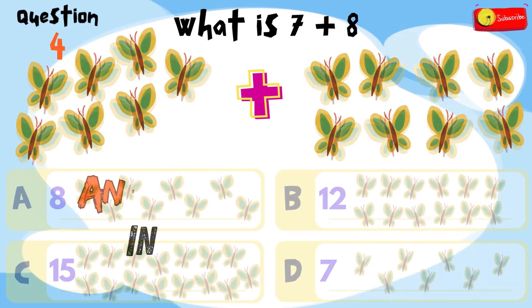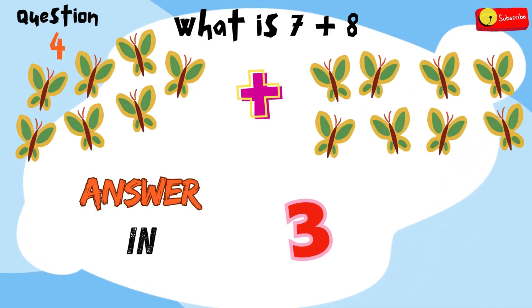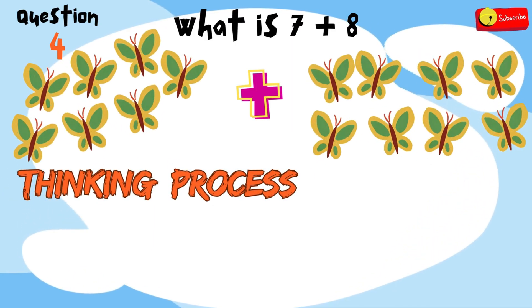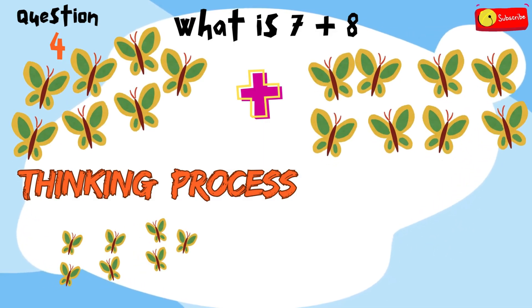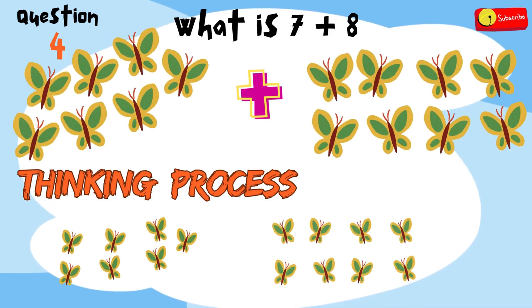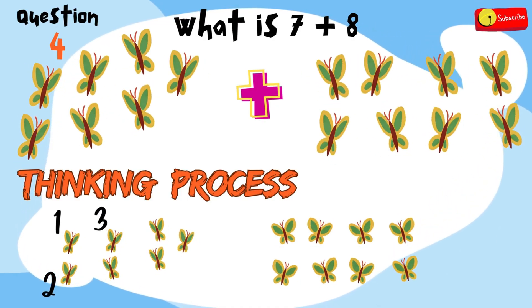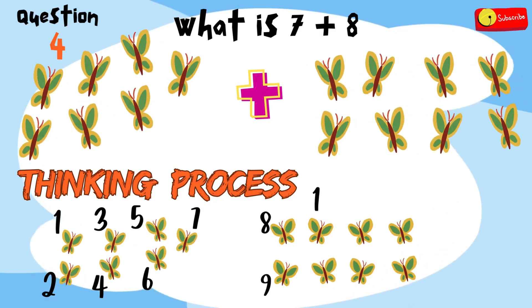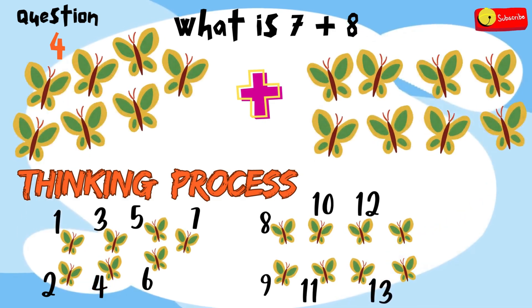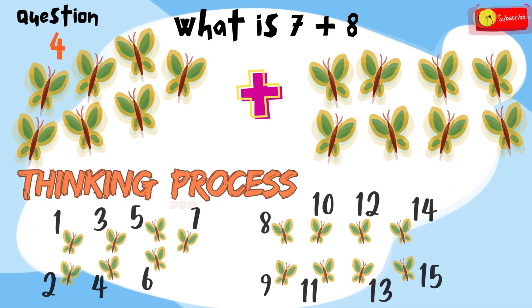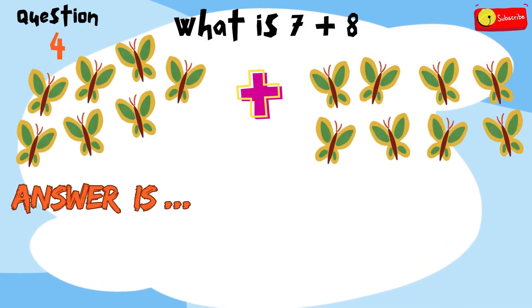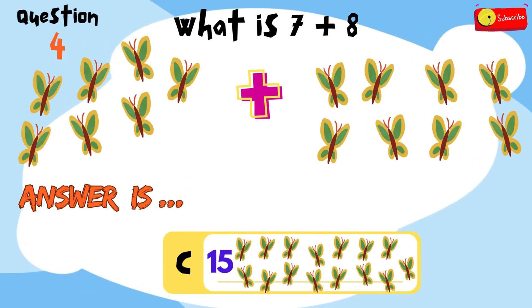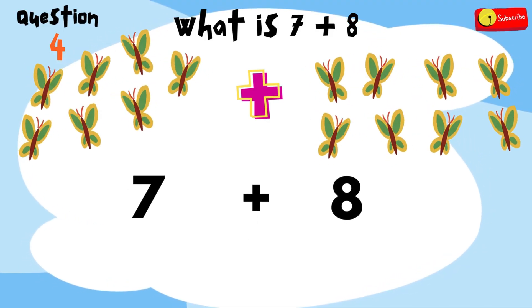All right, time's up! Here's the thinking process: if you have 7 butterflies and we add 8 more, in total we get 1, 2, 3, 4, 5, 6, 7, 8, 9, 10, 11, 12, 13, 14, 15. So the answer is C — 15 butterflies. So, 7 plus 8 equals 15.